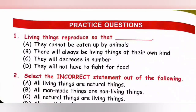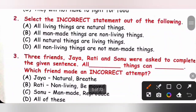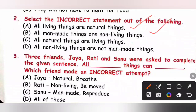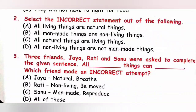Question 2: Select the incorrect statement. A: All living things are natural things — correct statement. B: All man-made things are non-living things — also correct. C: All natural things are living things — incorrect, because things like rock, soil, mountain, clouds, and sun are natural but non-living. D: All non-living things are not man-made things — correct, as some non-living things are natural. We need to select the incorrect statement, so option C is the correct answer.